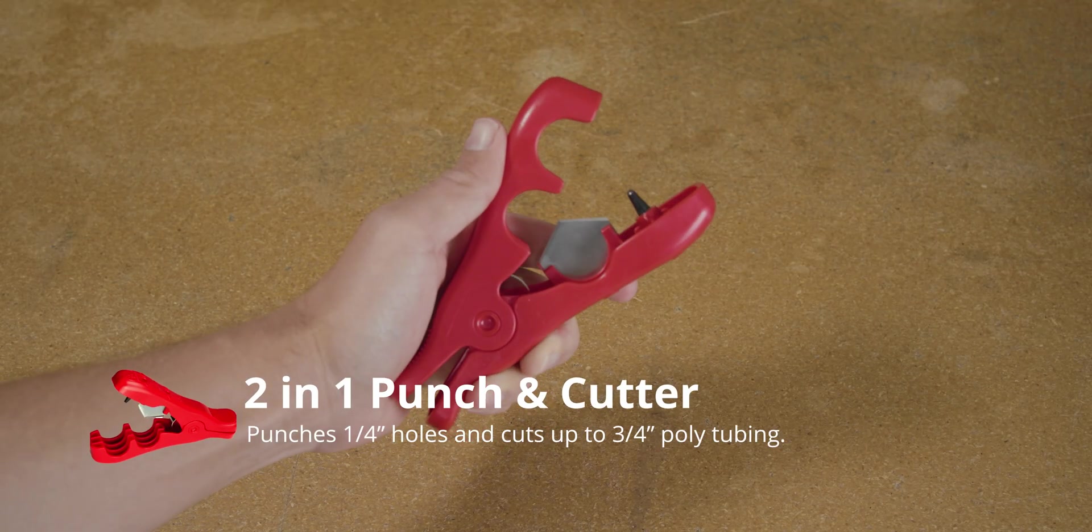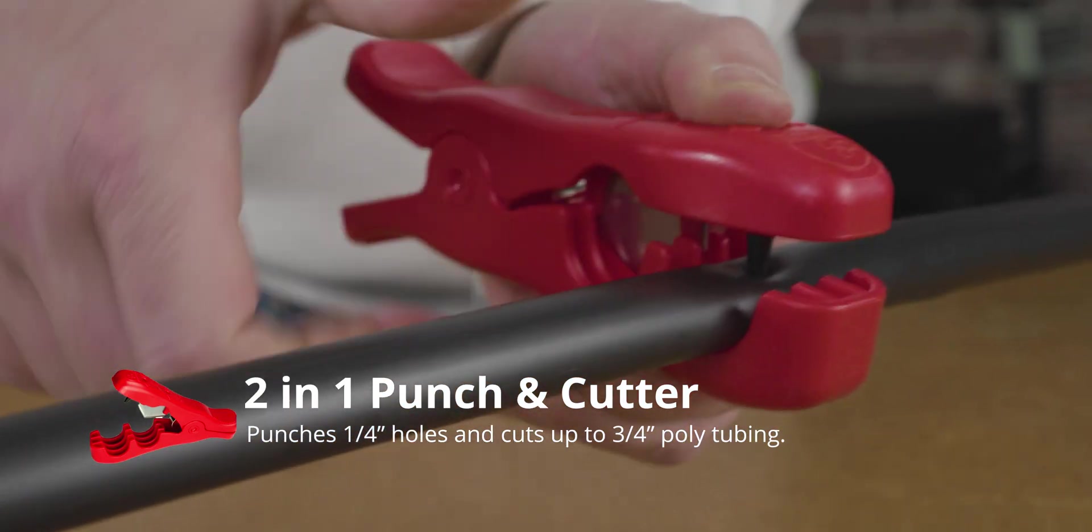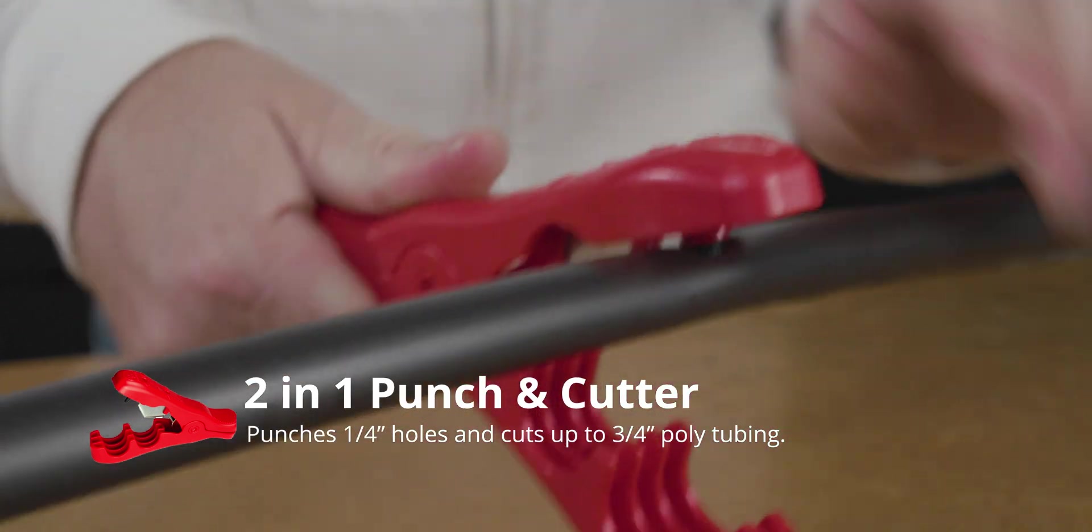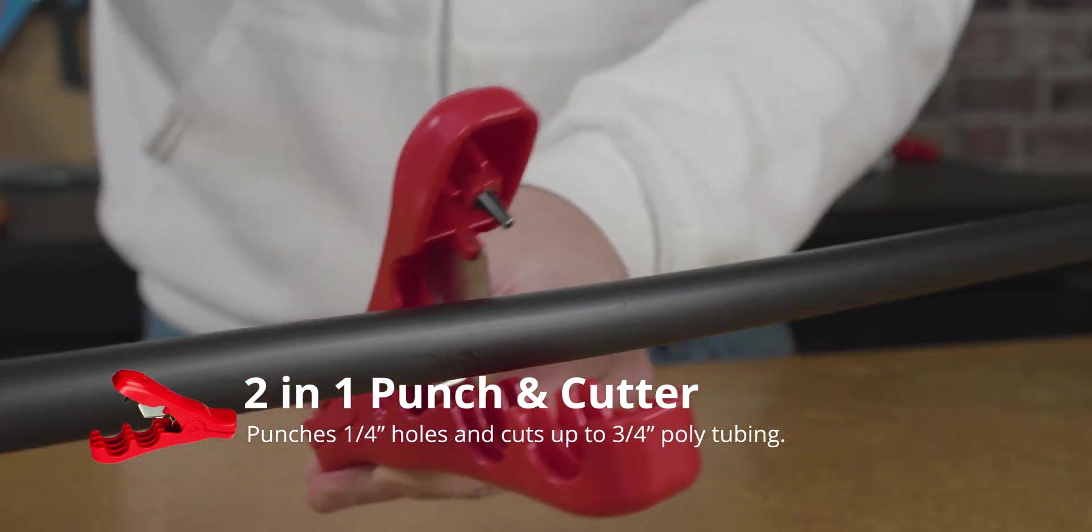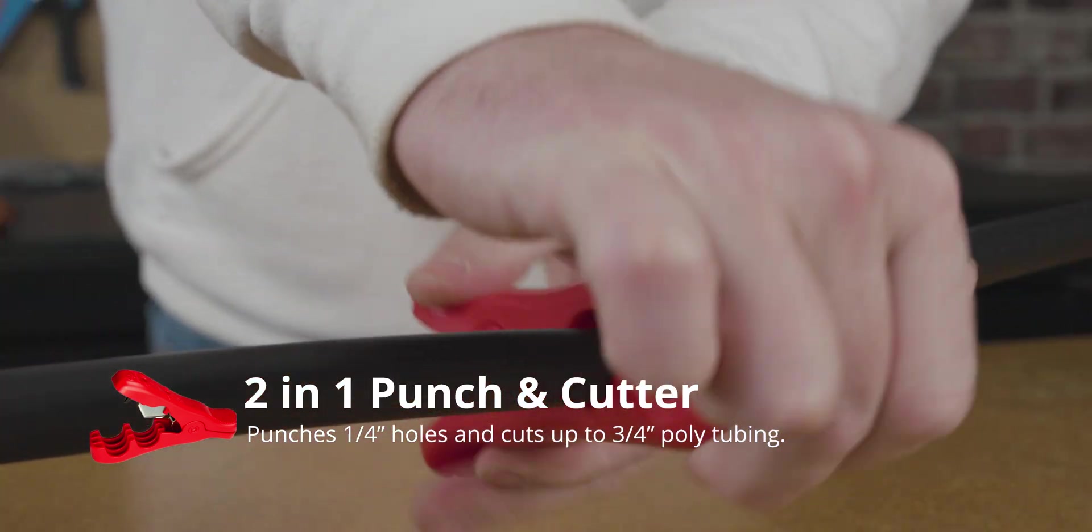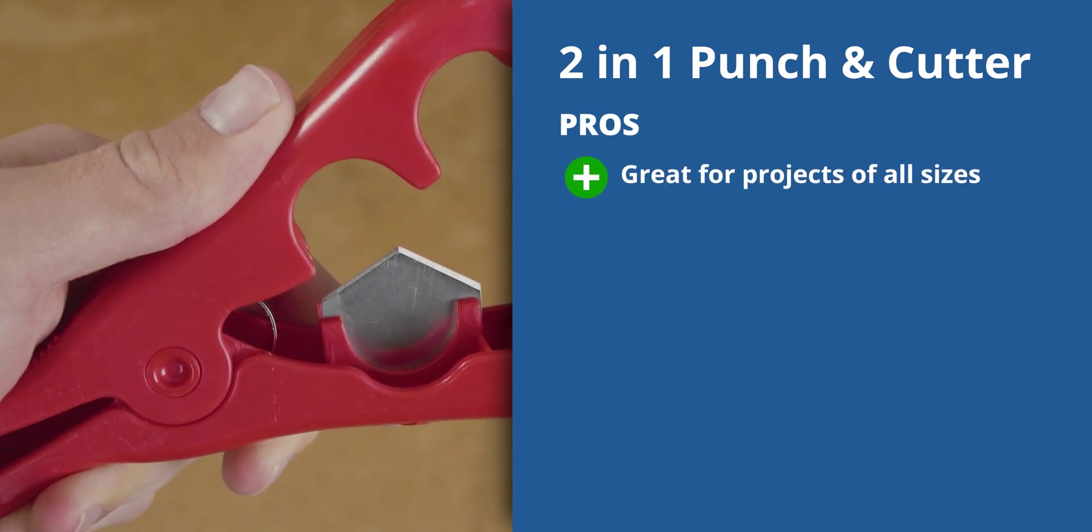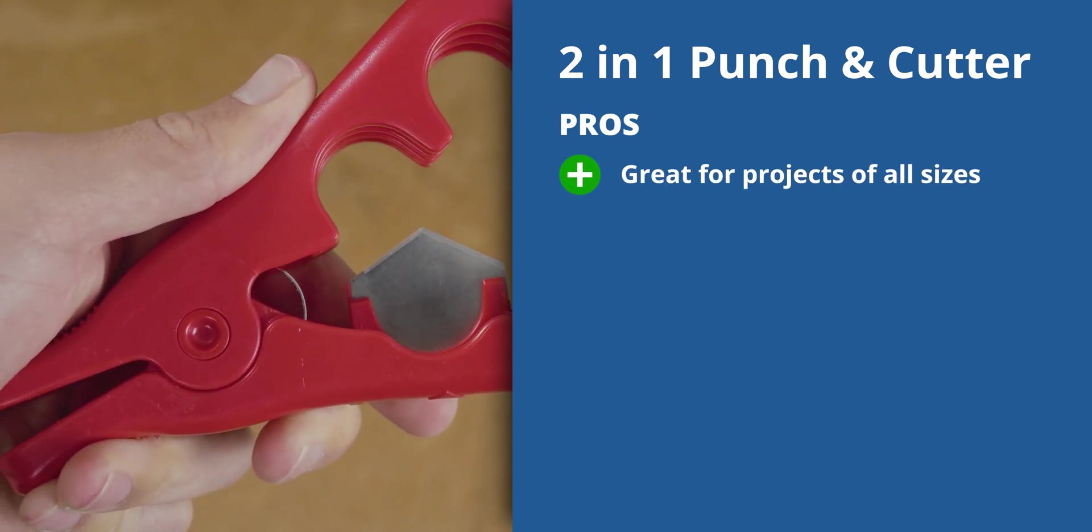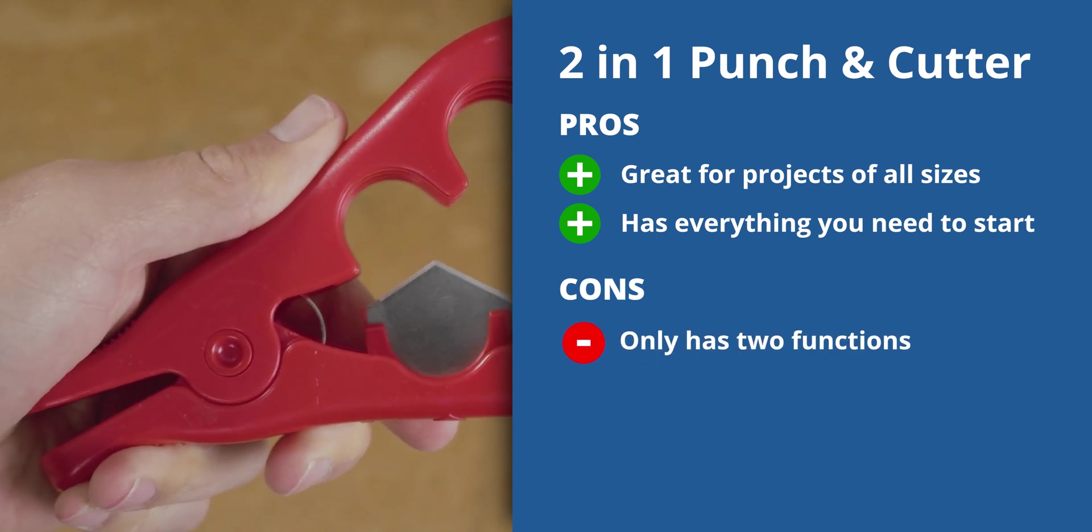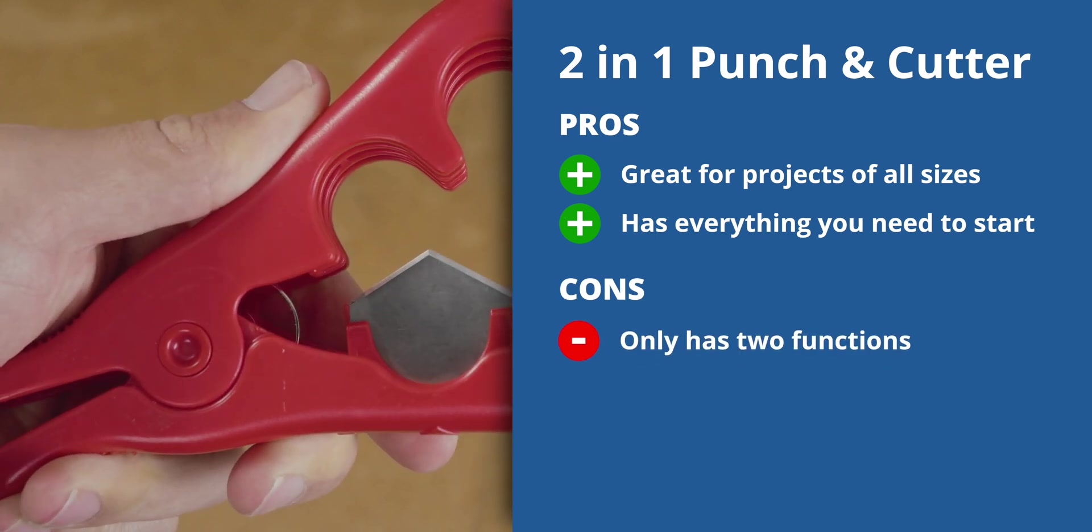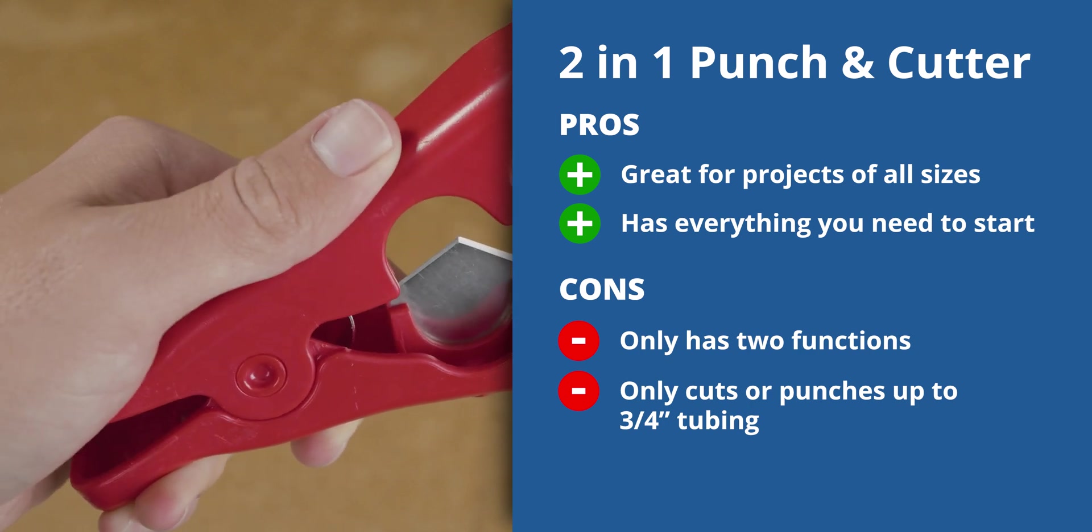This is our Antelco two-in-one punch and cutter. This versatile one-quarter inch punch can also cut tubing up to three-quarter inches in diameter. The two-in-one punch and cutter is versatile and gives you everything you need to finish a project. The cutter and punch should be long-lasting, even through larger projects. The only downsides are that it doesn't do anything other than punching and cutting and it can only cut or punch up to three-quarter inch tubing. If you want other functions, you'll need to pair it with another tool.